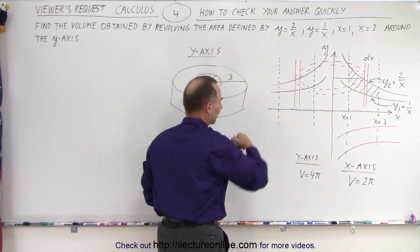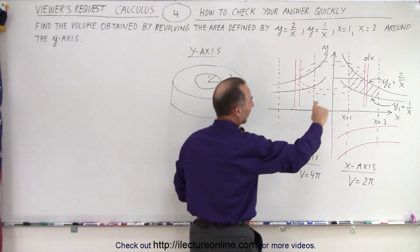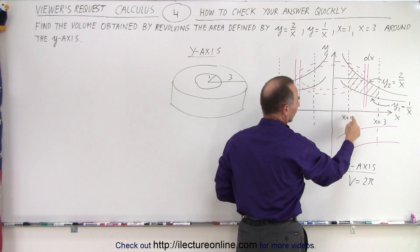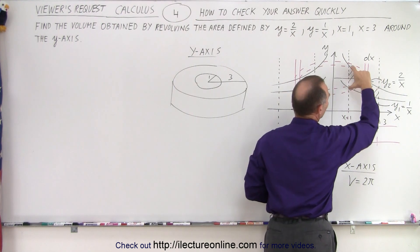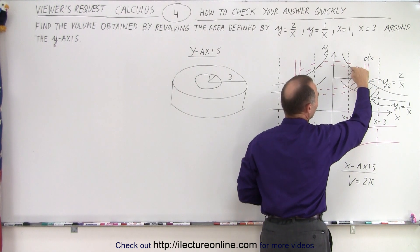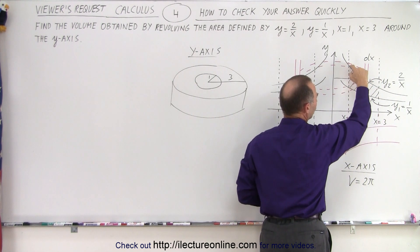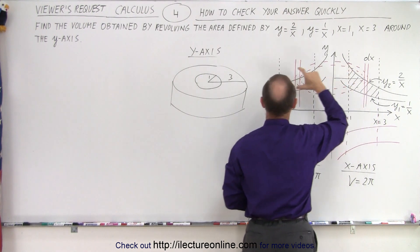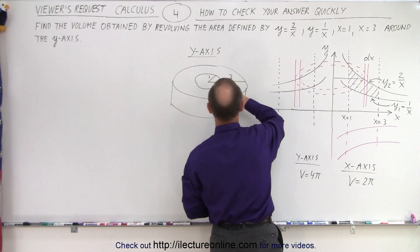So this would be 1, this here would be 3. What about the height? Well, notice that at this point on the inside, when we plug in x equals 1, then the height would be 2 here and the height would be 1 here. So 2 minus 1 would be 1. So the thickness here would be 1 on the inside.